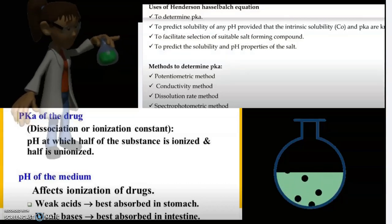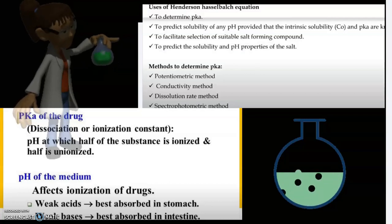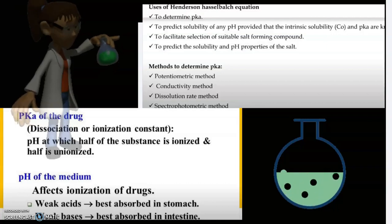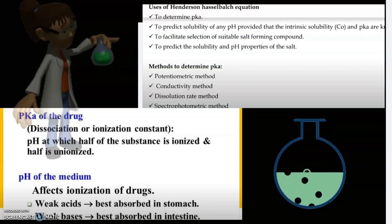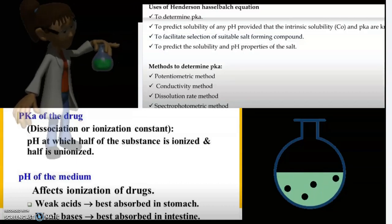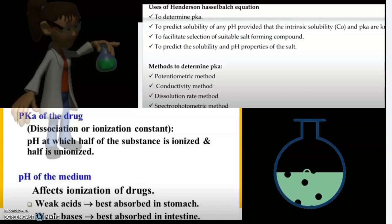pKa of the drug is the dissociation or ionization constant, the pH at which half of the substance is ionized and half is unionized. pH of the medium affects ionization of drug. Weakly acidic drugs are best absorbed in stomach whereas weakly basic drugs are best absorbed in intestine.